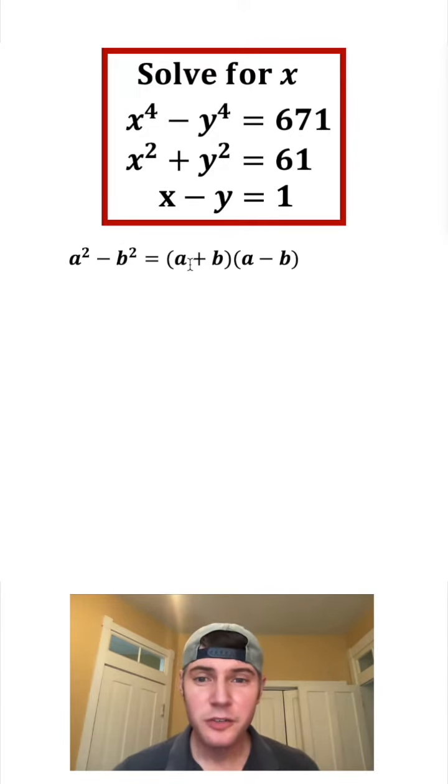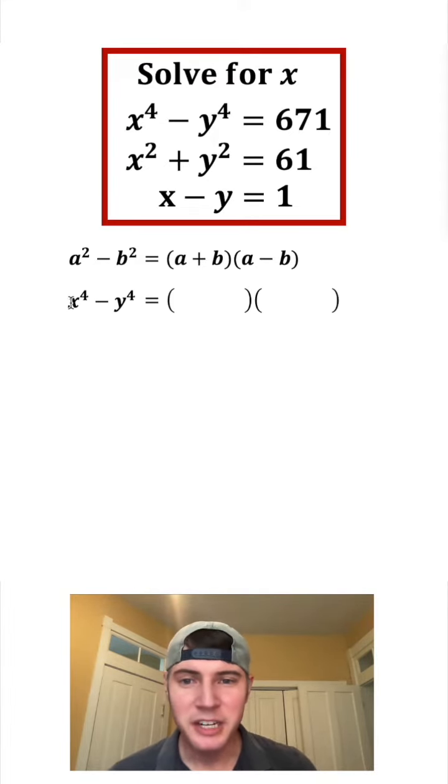It uses the difference of two squares. So if you have a squared minus b squared, it's equal to a plus b times a minus b. And we do have that going on right here: x to the fourth minus y to the fourth. That is a difference of two squares, so we can use this formula.